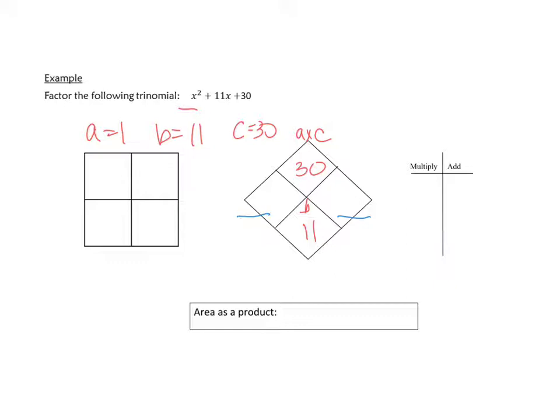And I'm just going to go down the list. 1 times 30. Well, the product is right, but 1 plus 30 is 31, so that doesn't work for us. 2 times 15. The product is correct, but 15 plus 2 is 17, so that does not work. 3 times 10. Again, it's 30, but adds up to 13. 5 times 6 equals 30, but it also adds up to 11. So here we go. These are our numbers, 5 and 6.